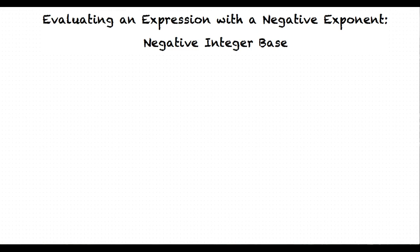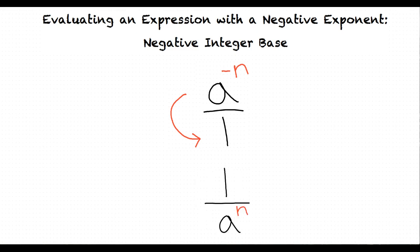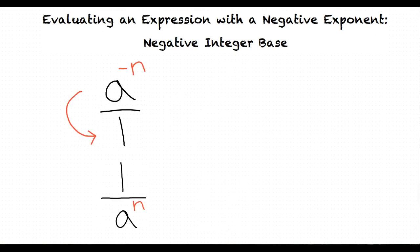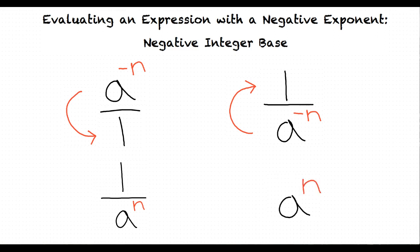What's the difference between a positive and negative exponent? Great question! The biggest difference is that with a negative exponent, we need to move both the base and the exponent to the denominator in order to convert the exponent to a positive. If the negative exponent was located in the denominator, then we would move both the base and exponent to the numerator in order to make the exponent positive.